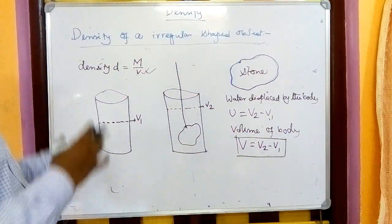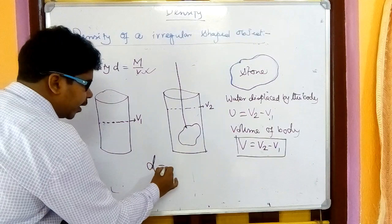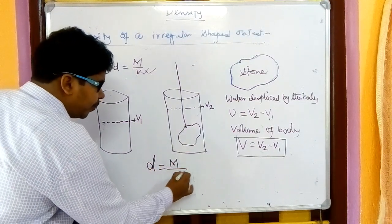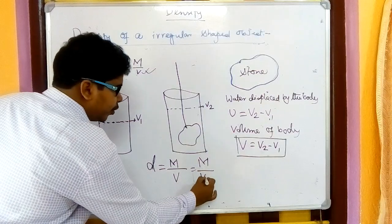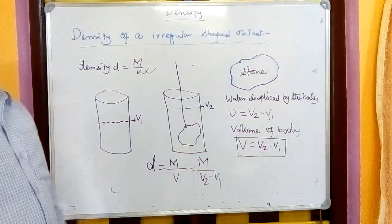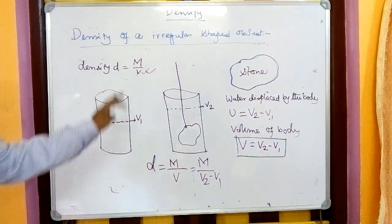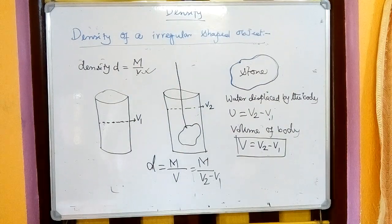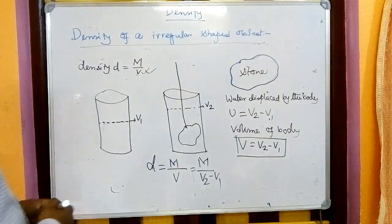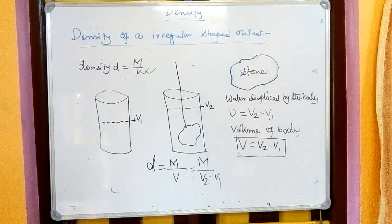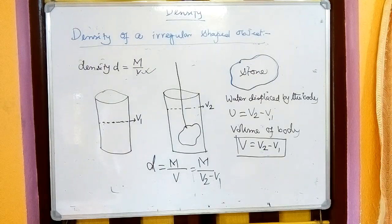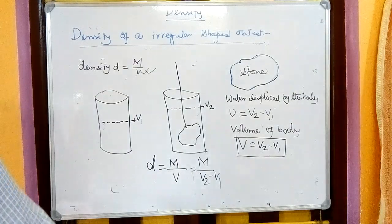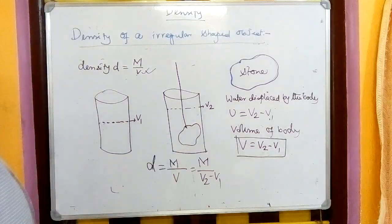Now that we have the volume, it is easy to find the density: d = m/v, which means d = m / (v2 − v1). Write this down — this equation is very important. Using this equation we will solve some numericals, and I will also give homework using it.